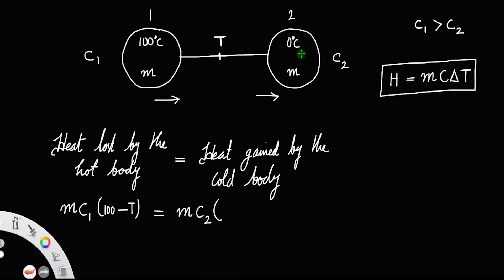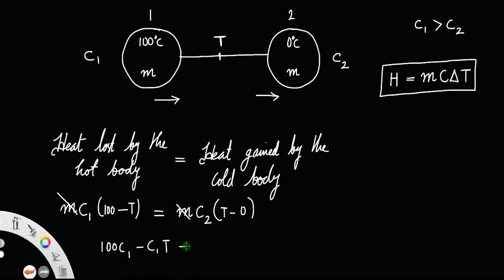Since the second body is cold, it gains heat and its temperature rises. Since t is always greater than 0 degrees Celsius, the change in temperature for the second body is t minus 0. We can cancel the masses, so multiplying c1 by 100 minus t gives: 100c1 minus c1·t equals c2·t.